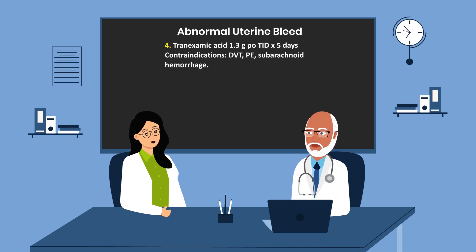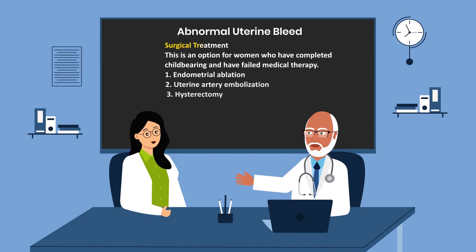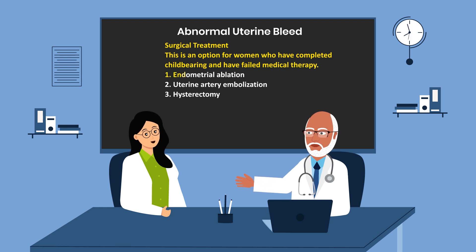Tranexamic acid, given at 1.3 grams by mouth three times a day for five days, is another option. Contraindications include DVT, PE, or subarachnoid hemorrhage. Surgical treatment is also an option for women who have completed childbearing and have failed medical therapy. Options include endometrial ablation, uterine artery embolization, and ultimately hysterectomy.